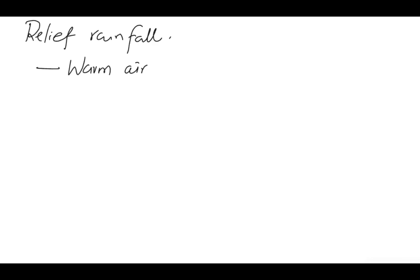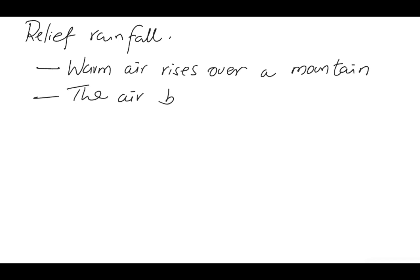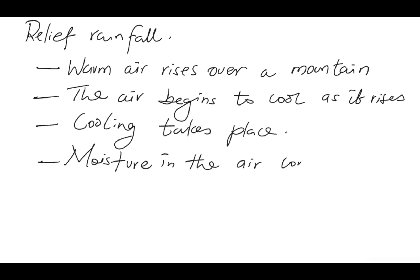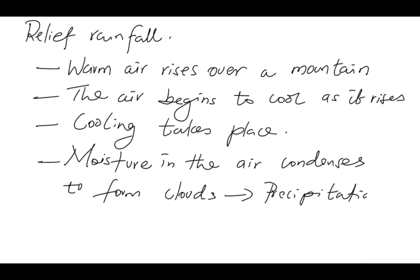Let's dive into the relief rainfall. This type of rainfall is formed in areas where warm moist air moves or rises over a mountain — the mountain being the relief feature. As the air rises, because of declining temperature (the higher you go, the cooler it becomes), the air is cooled and eventually this cooling leads to the formation of clouds through the process of condensation. From these clouds we get precipitation in the form of rainfall, and that is how relief rainfall is formed.